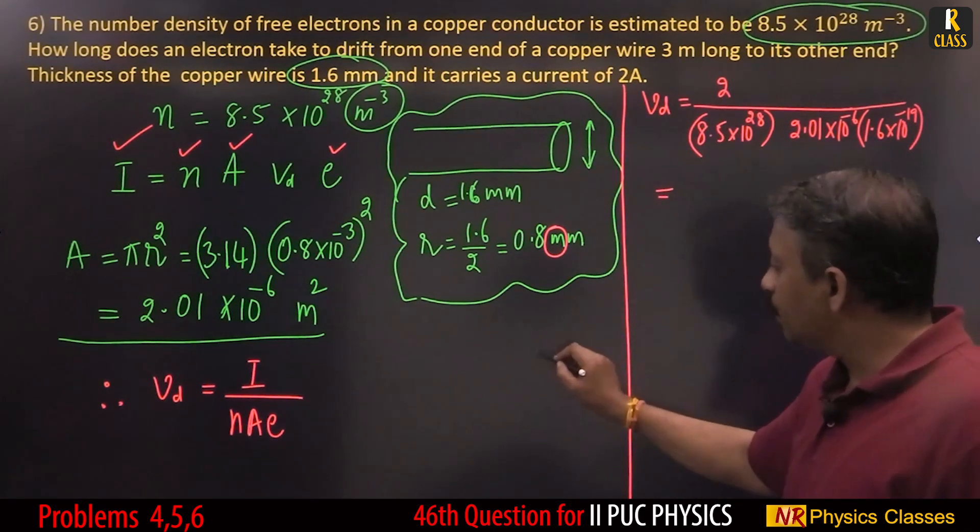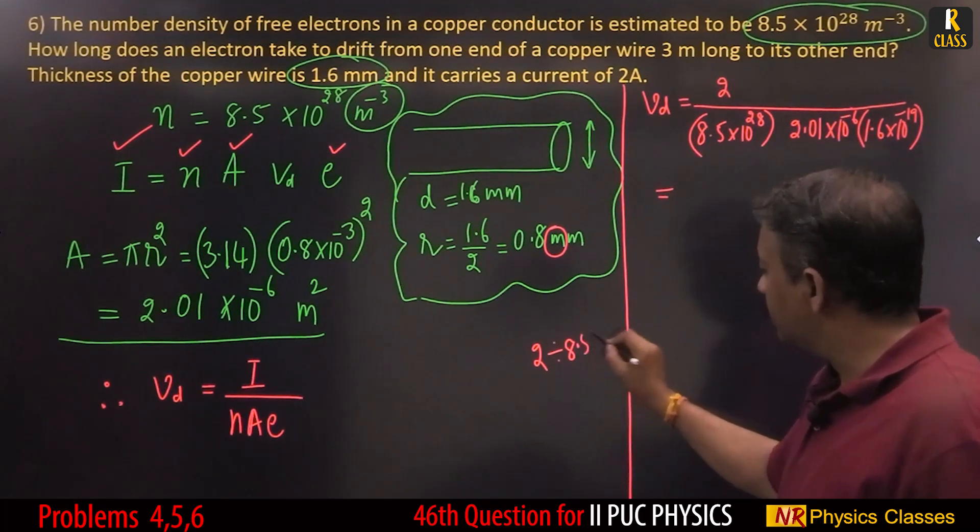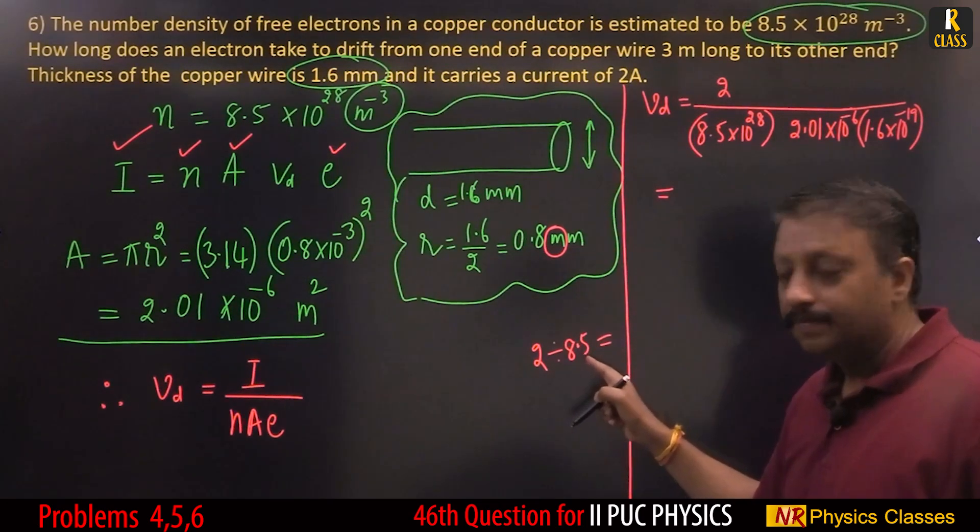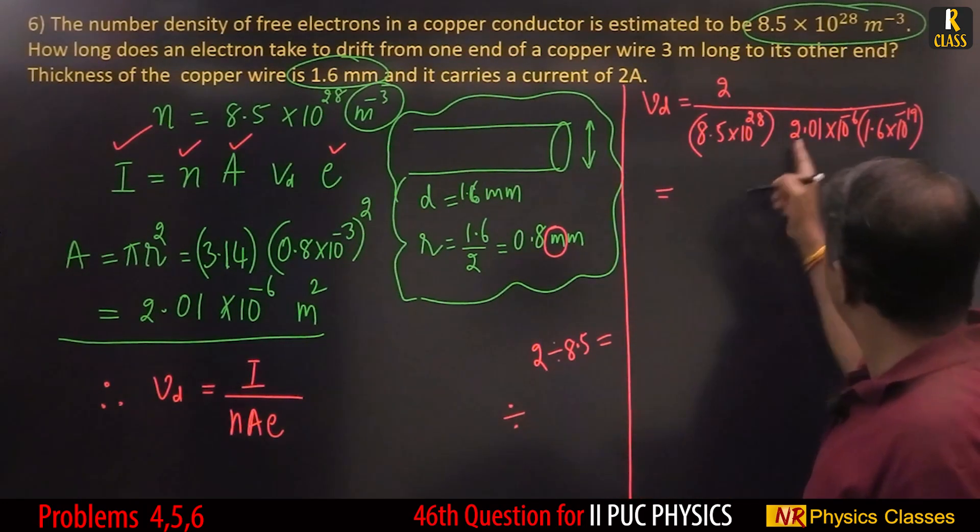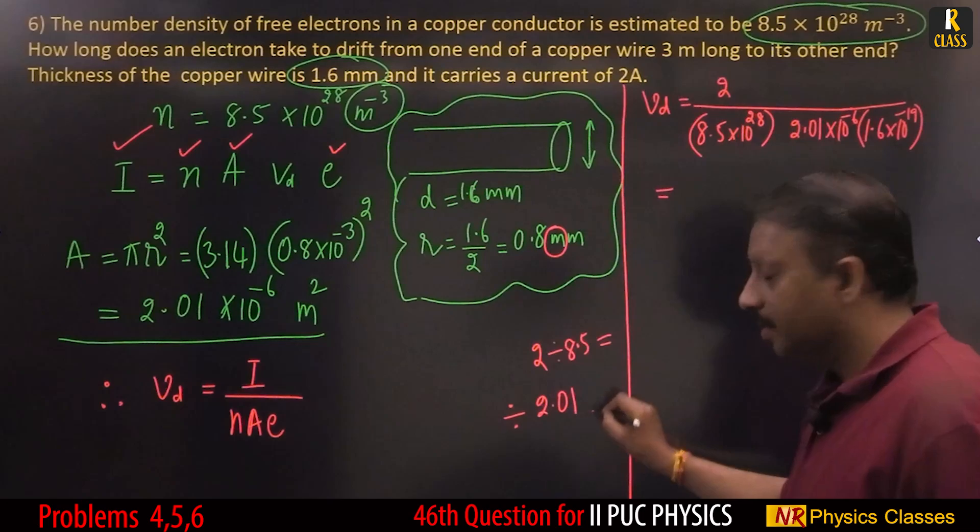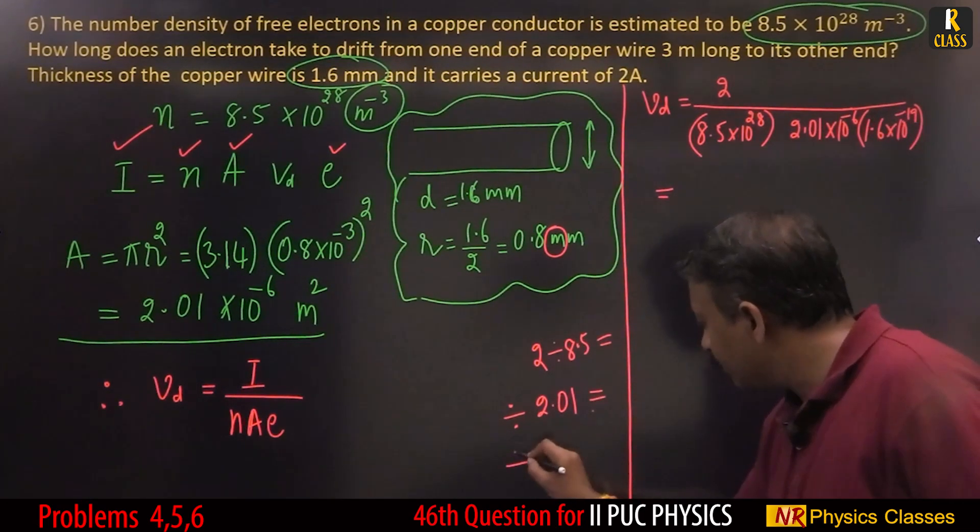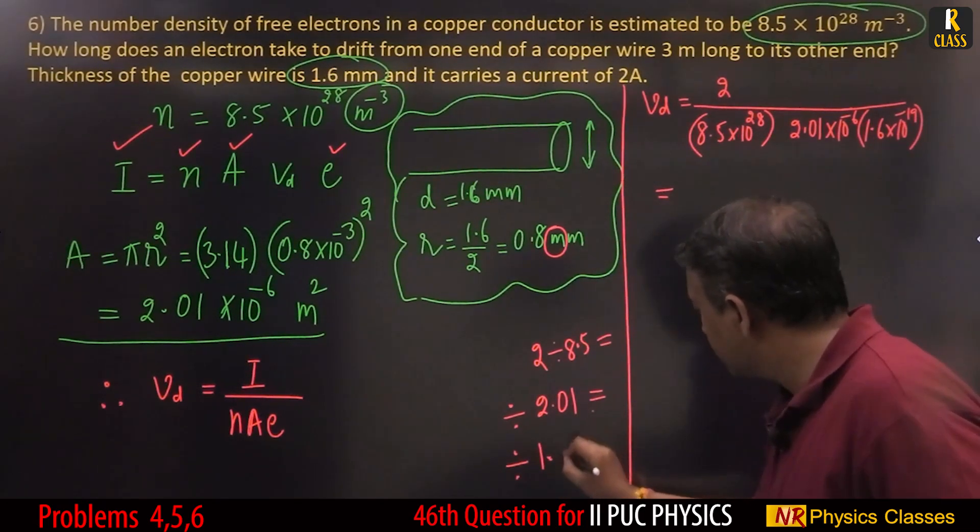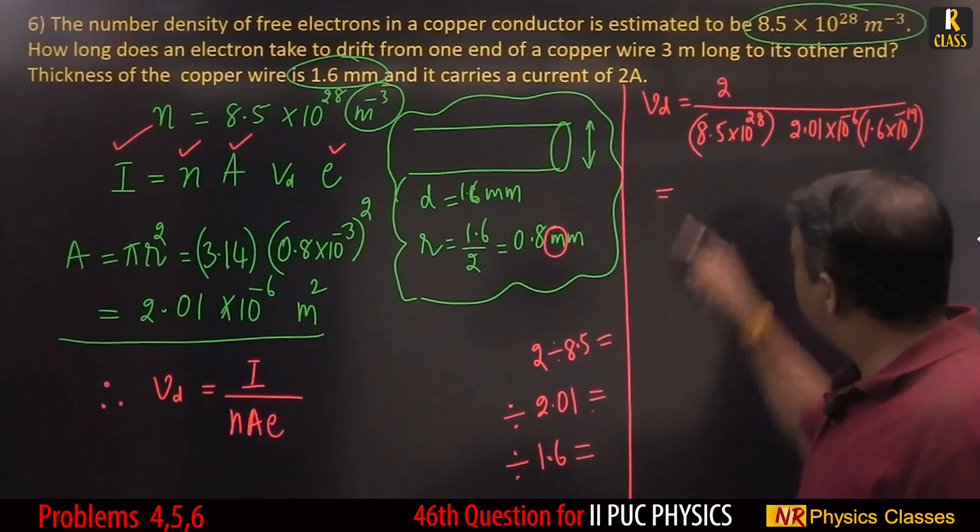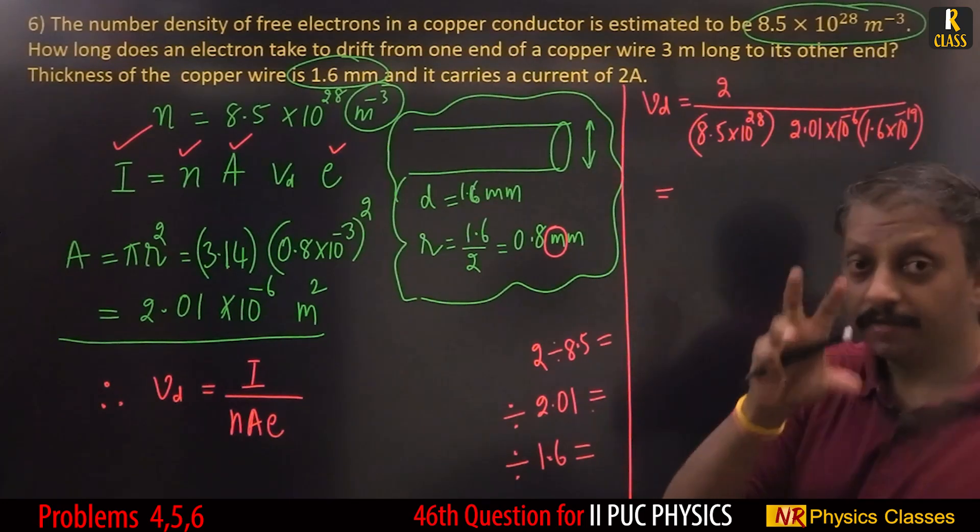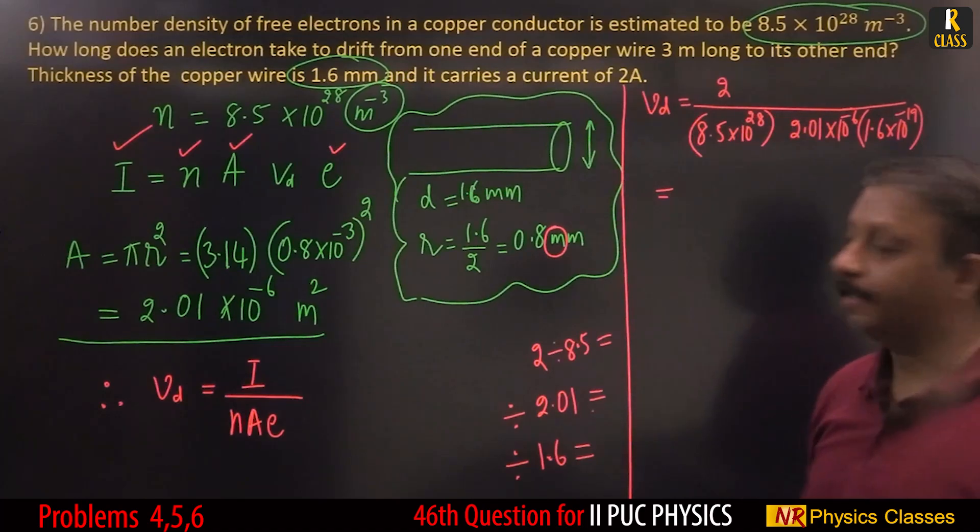I would like to tell you this: type 2, then divided by 8.5, press equals, then again divided by 2.01, press equals, then divided by 1.6 equals. That gives final answer. The way you type depends on the calculator software.